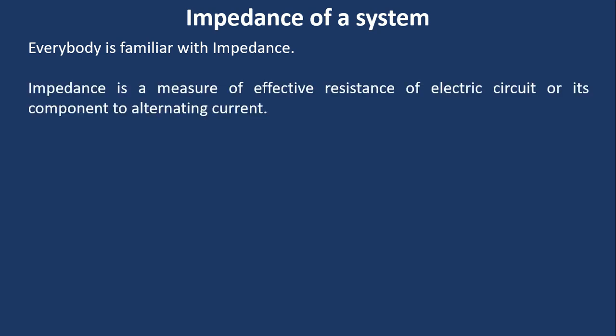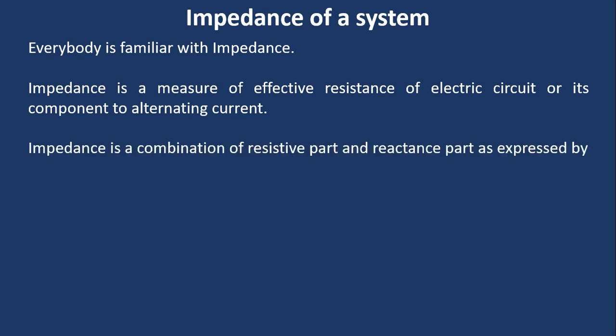So impedance of a system. Everybody is familiar with impedance. Impedance is a measure of effective resistance of electric circuit or its component to alternating current. So impedance is a combination of resistive part and reactance part as expressed by Z = R + jX.